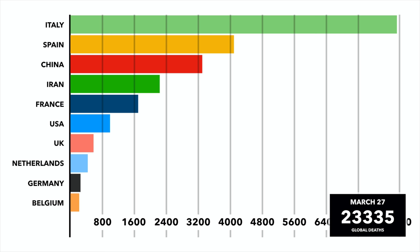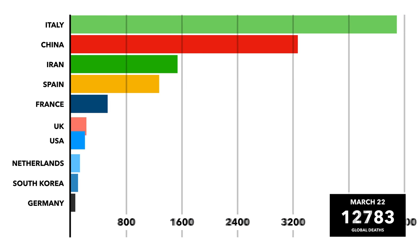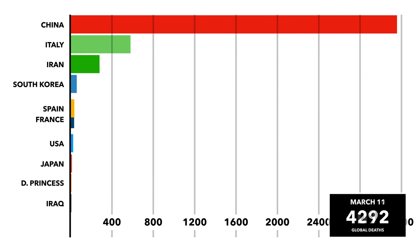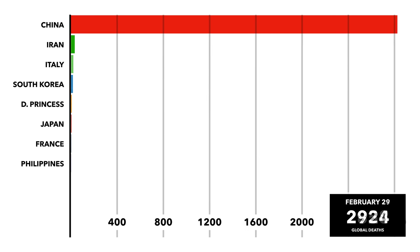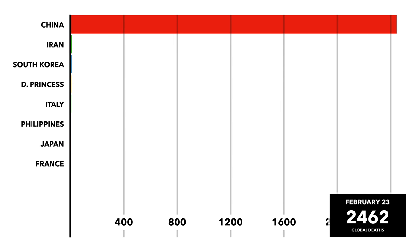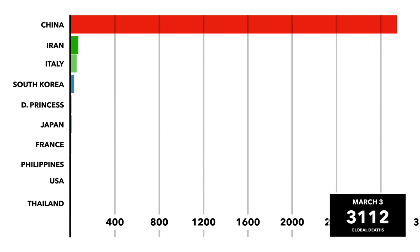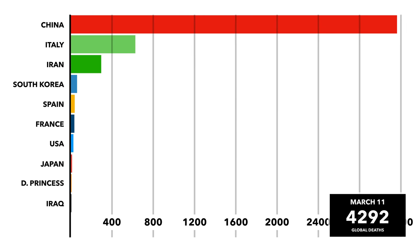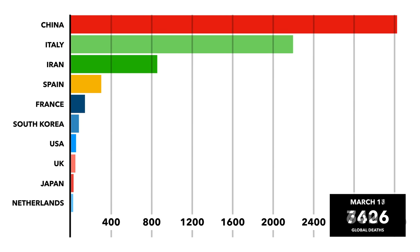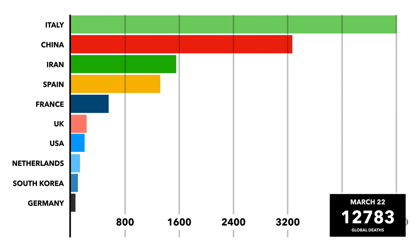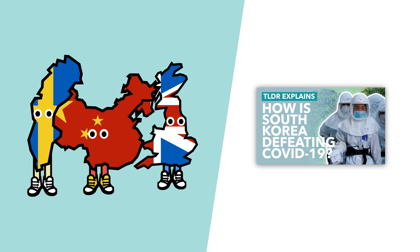One country I didn't mention here, because we were focusing on countries with increasing death rates, is South Korea. Rewind towards the beginning and you'll see that they were initially high on the list, having the third most cases towards the end of February, before slowly slipping off the list altogether. South Korea has still suffered a significant number of fatalities, but the measures the country was able to take meant that they didn't see deaths rocket as has happened in other countries. We made a video explaining this, as well as comparing the approaches of China, Sweden, South Korea and the UK.